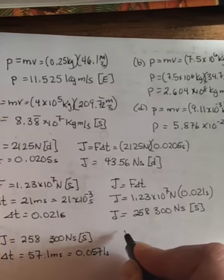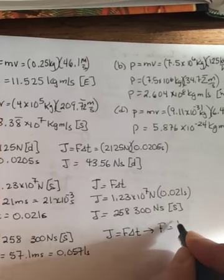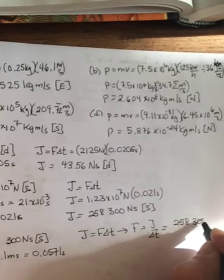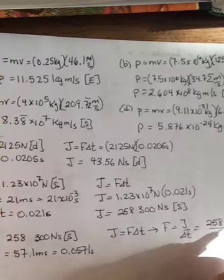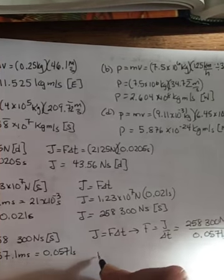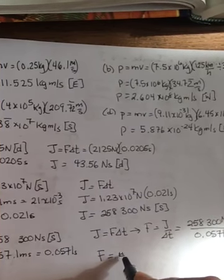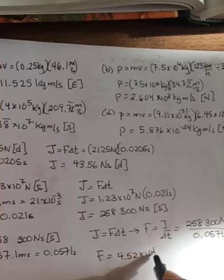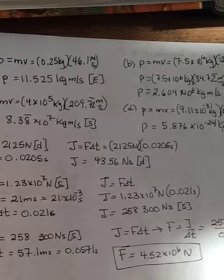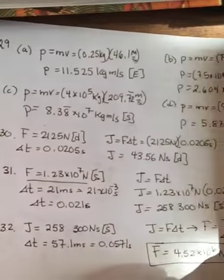And this time, it wants you to find what force the car would experience. So J equals F delta t. So F is going to equal J over delta t. So you're going to take that 258,300 newton seconds, and you're going to divide it by the 0.071 seconds. And when you do, you get an F of 4.52 times 10 to the 6th newtons. Now this is still a pretty big force, but look at what it is compared to the one in number 31.